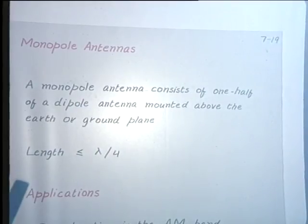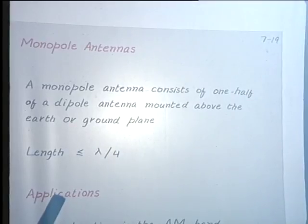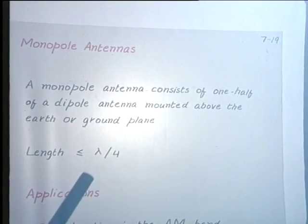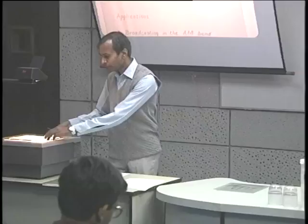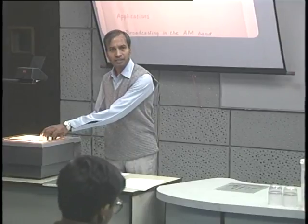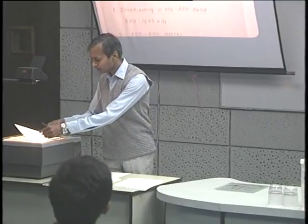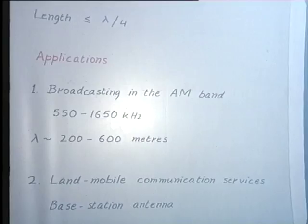The length is usually restricted to lambda by 4, and of course, if it is an electrically short monopole antenna, the length is going to be even smaller, less than lambda by 4. The monopole antenna is one of the simplest antennas that one may have and it has important applications.